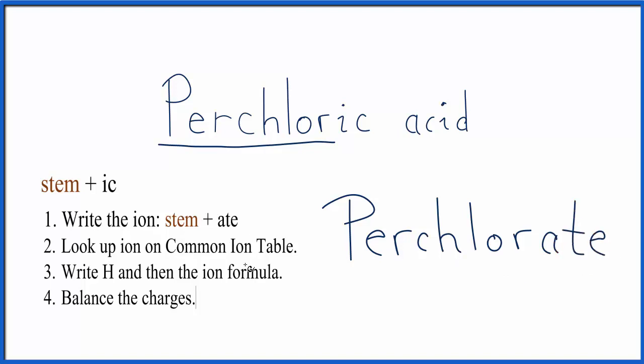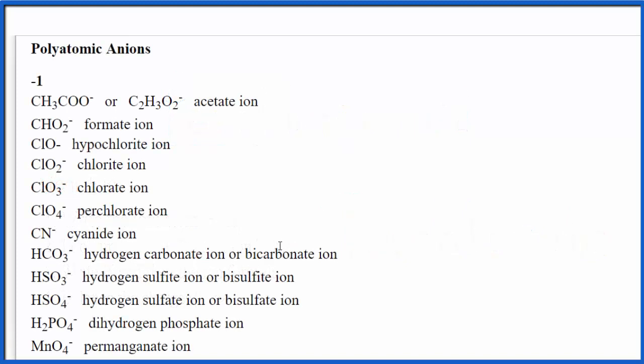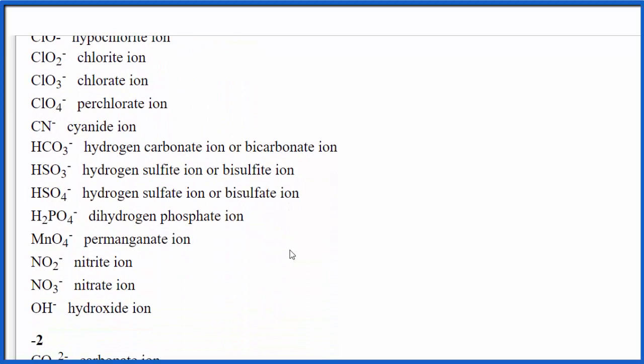And we need to look that up on the common ion table. So we'll look on the table, we're going to scroll down, and we're going to try to find perchlorate. We see chlorate, and there's perchlorate.